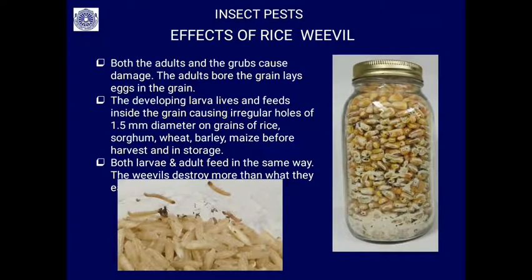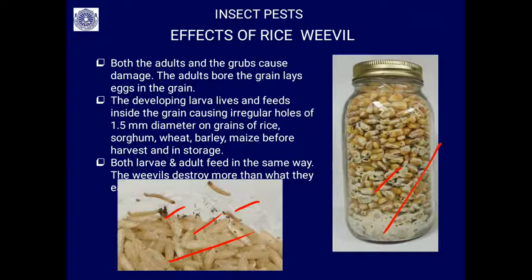The effects of the rice weevil are severe. You can see how maize is reduced to powder by boring. Both adults and grubs cause damage: the adults bore the grain and lay eggs inside, while the developing larvae live and feed inside the grain, causing irregular holes of 1.5 millimeter diameter on grains of rice, sorghum, wheat, barley, and maize.